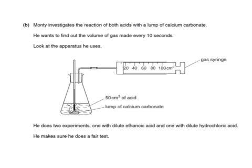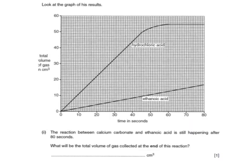Monty investigates the reaction of both acids with a lump of calcium carbonate, measuring the volume of gas every 10 seconds using a gas syringe, doing two experiments — one with dilute ethanoic, one with dilute hydrochloric — as a fair test. The graph shows the hydrochloric acid reaction is much faster, finishing after about 60 seconds. The ethanoic acid reaction is still happening after 80 seconds. Reading across the graph, the total volume expected is 55 cubic centimetres — the same for both, but the ethanoic acid takes much longer to produce it.